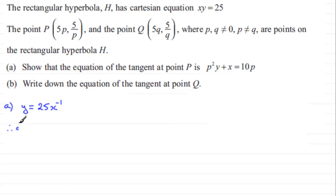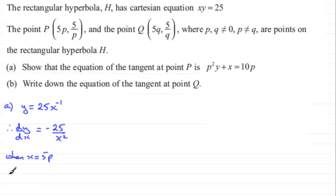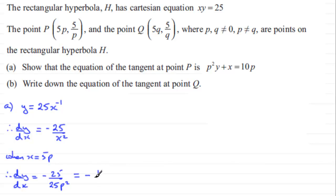Differentiating in the usual way gives us dy/dx equals minus 25x to the power minus 2, which is minus 25 over x². We need the gradient when x equals 5p, so dy/dx equals minus 25 divided by x squared. If x is 5p, then x squared is 25p², and the 25s cancel, leaving us with minus 1 over p².